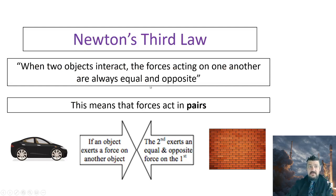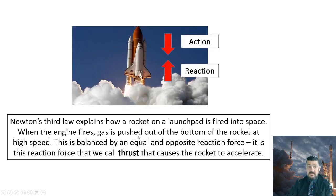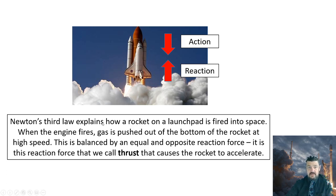So now we're going to look at Newton's third law. This states that when two objects interact, the forces acting on one another are always equal and opposite. Forces act in pairs — if an object exerts a force on another object, the second exerts an equal and opposite force on the first. Newton's third law explains how a rocket is fired into space: when the engine fires, gas is pushed out the bottom of the rocket at high speed. This is balanced by an equal and opposite reaction force — it is this reaction force, which we call thrust, that causes the rocket to accelerate upwards.